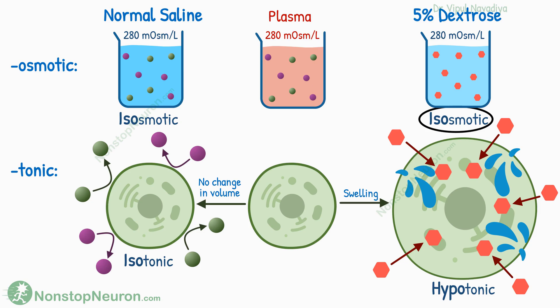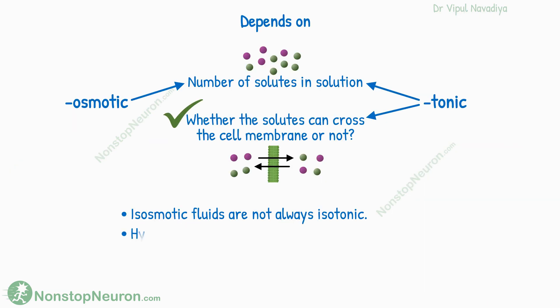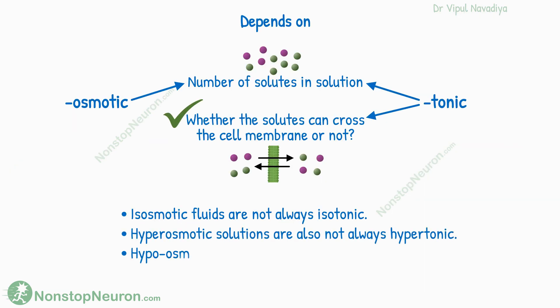Thus, this solution is hypotonic in spite of being isoosmotic. Therefore, isoosmotic fluid is not always isotonic. Even hyperosmotic solutions are not always hypotonic. However, hypoosmotic solutions are always hypotonic.